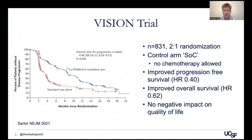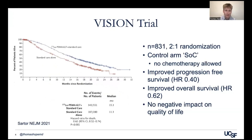This approach was evaluated in the VISION trial — a randomized phase three study in about 800 patients comparing lutetium PSMA-617 plus standard of care versus standard of care alone. There was no chemotherapy allowed in this trial, but the results demonstrated an improvement in progression-free survival with a hazard ratio of 0.4, and also an improvement in overall survival with a hazard ratio of 0.6. The use of PSMA radioligand therapy increased patients' lives, and there was no evidence of a negative impact on quality of life.